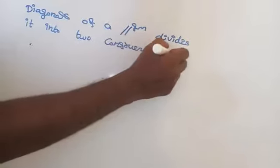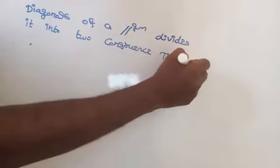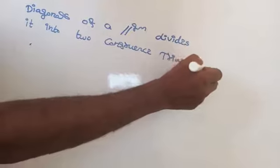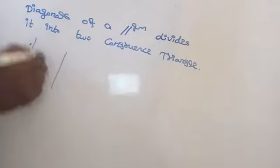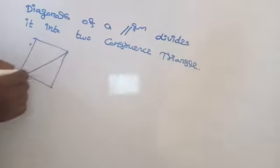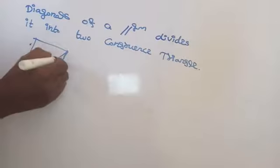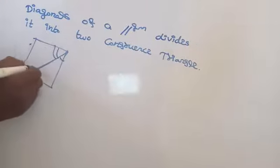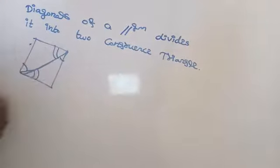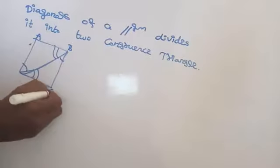We will see the proof for this. Suppose this parallelogram — this is a diagonal. Alternating triangles are equal. A, B, C, D is a parallelogram.